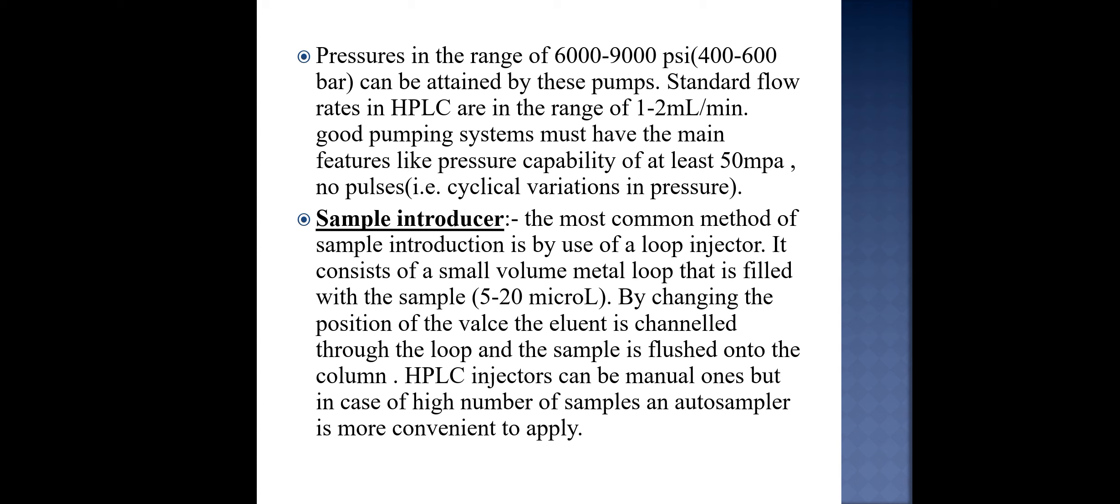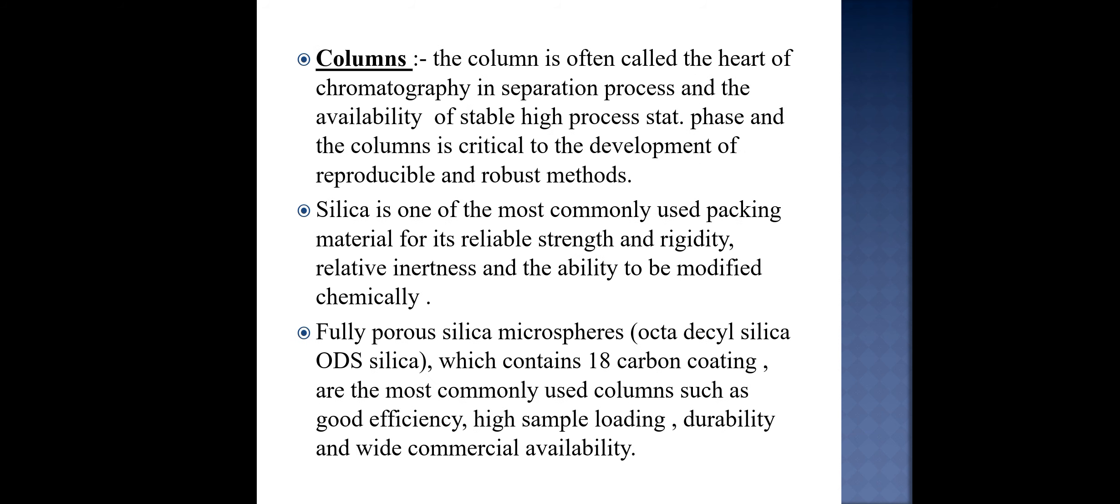The most common method of sample introduction is by the use of loop injector. It consists of a small volume metal loop that is filled with the sample 5 to 20 microliters. By changing the position of the valve, the eluent is channeled through the loop and the sample is flushed onto the column. HPLC injectors can be manual ones but in case of high number of samples an autosampler is most convenient to use.